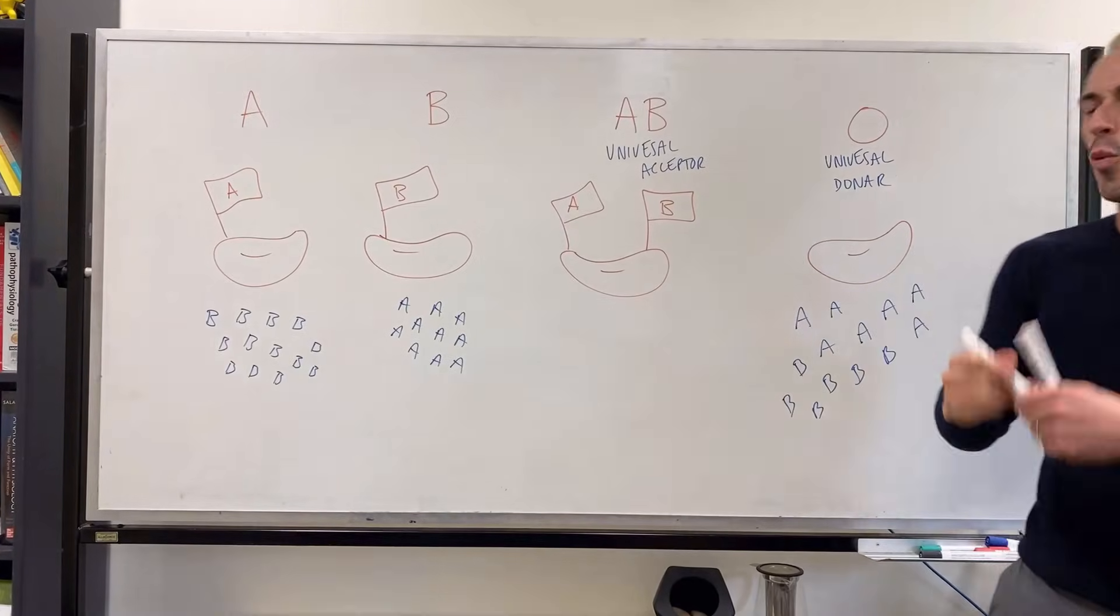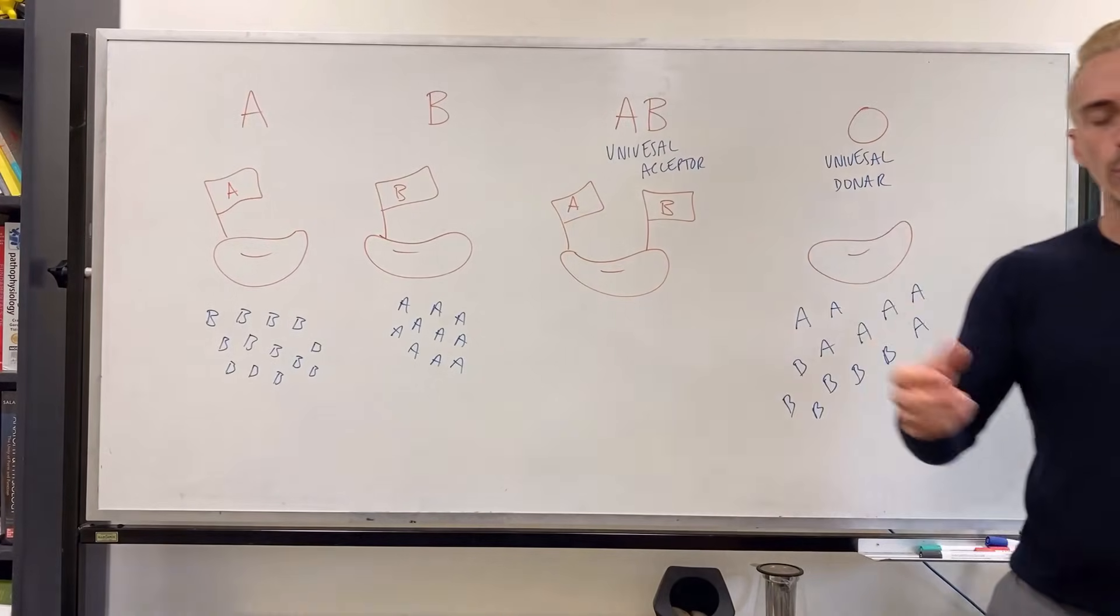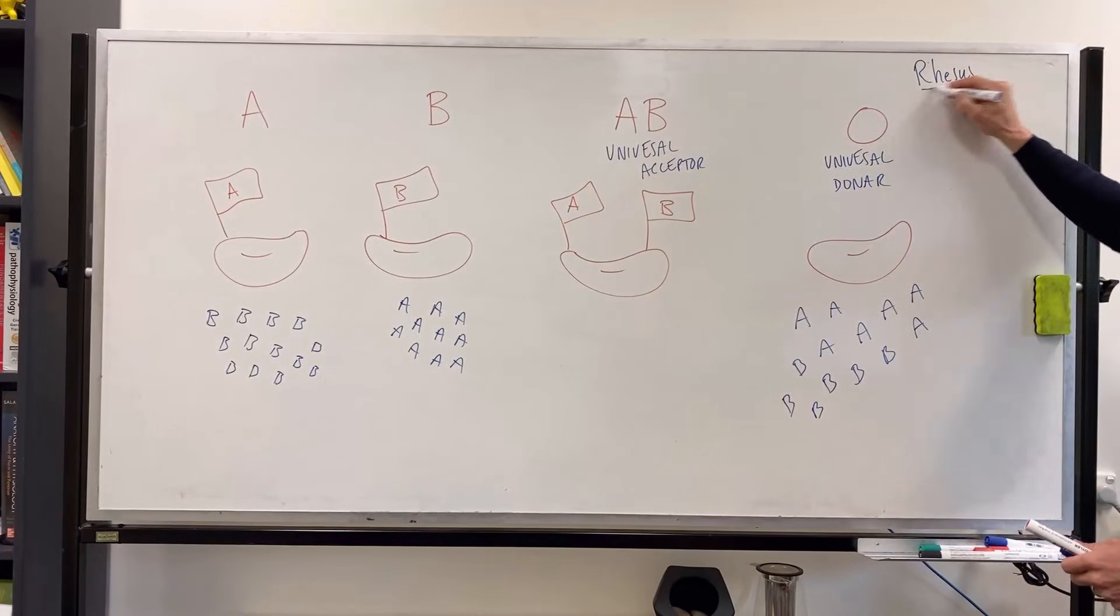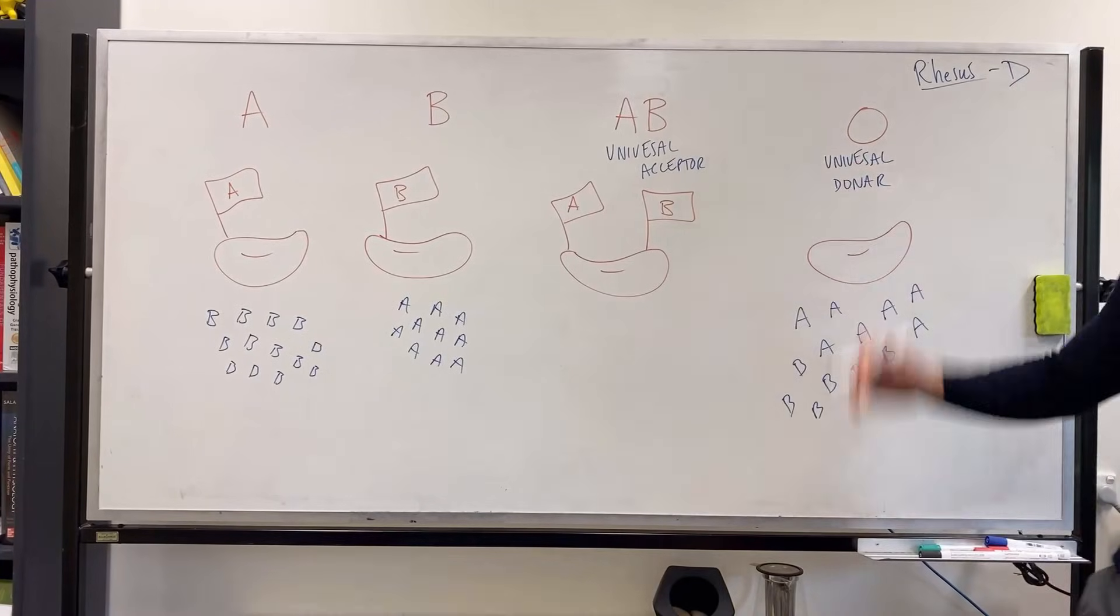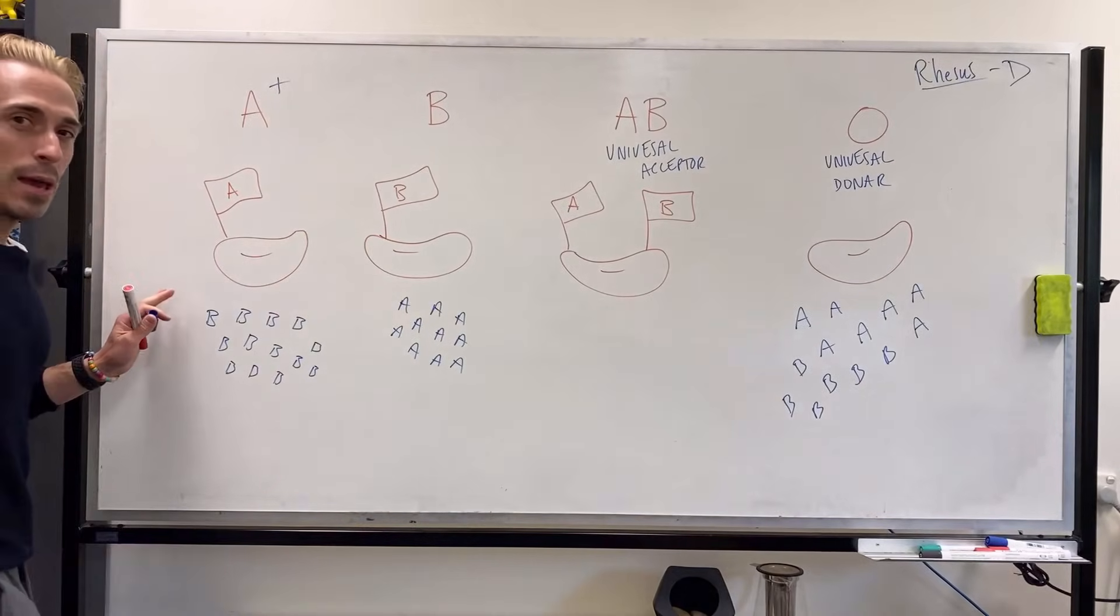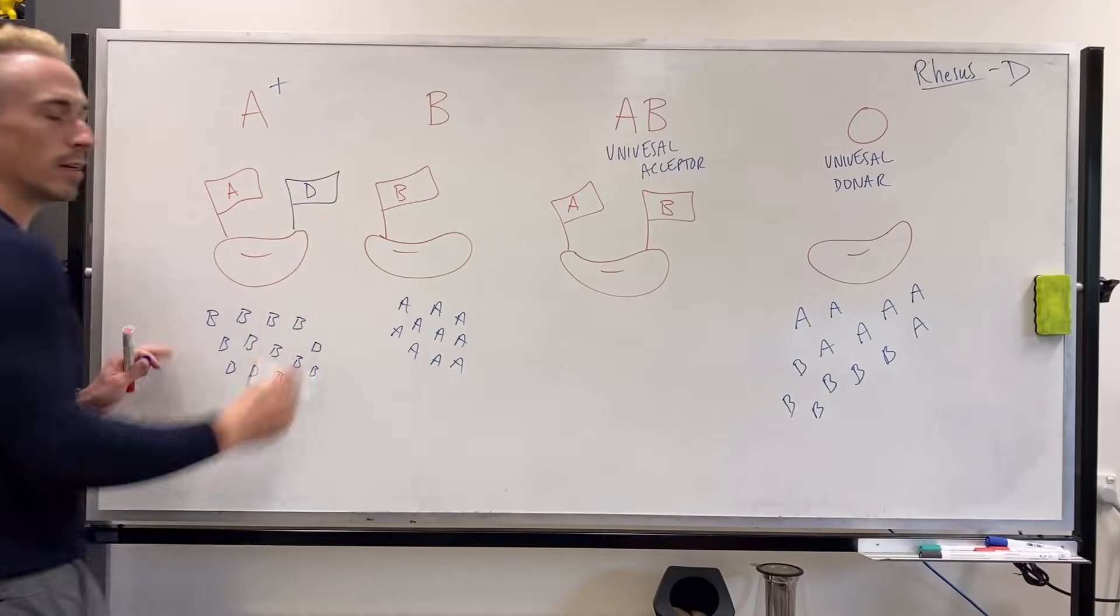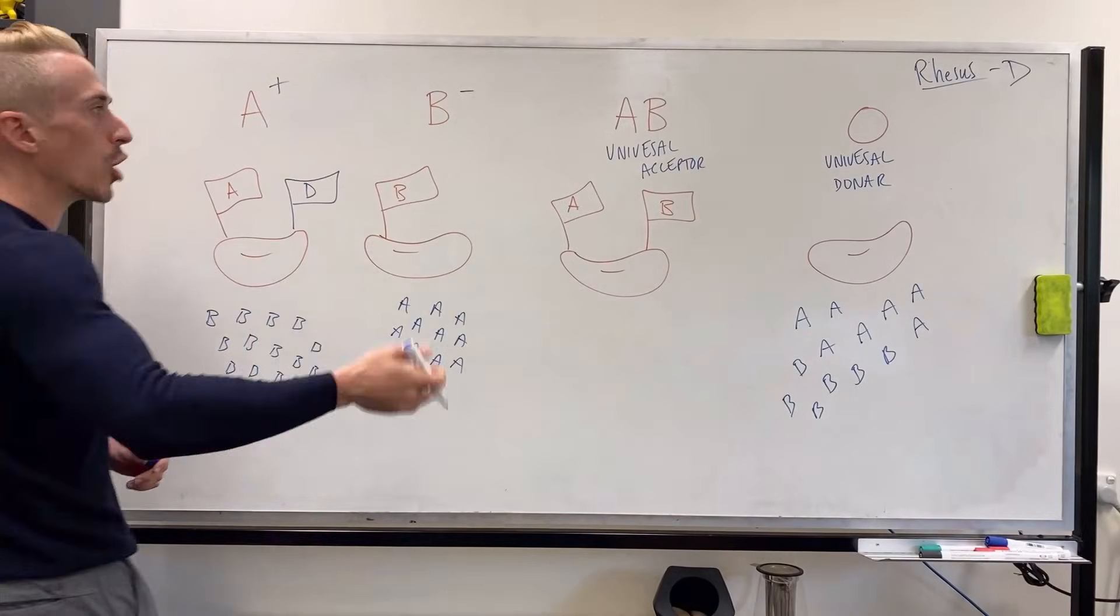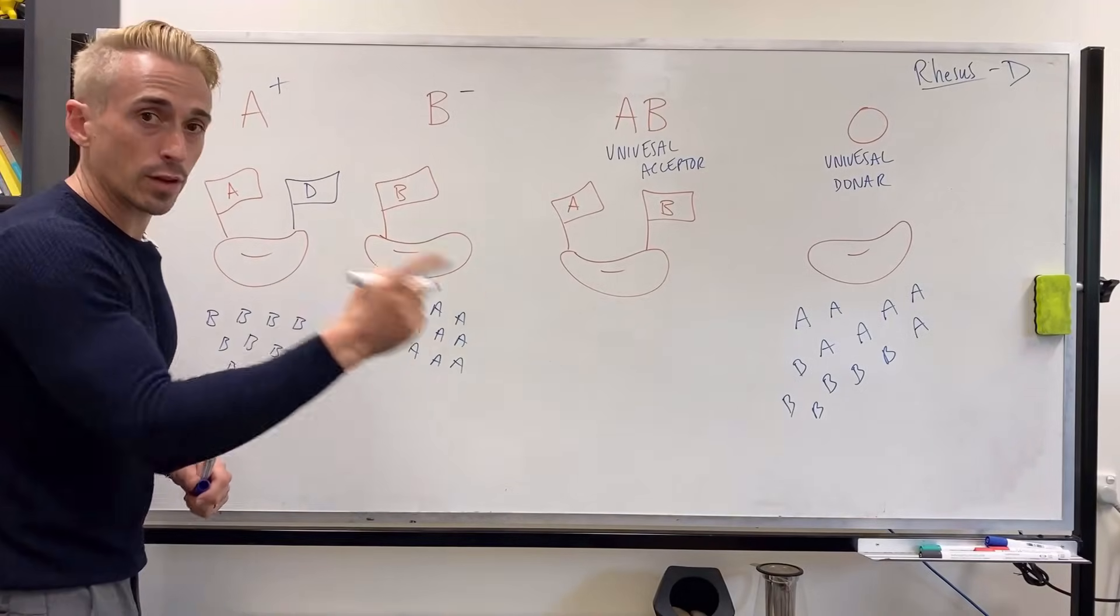Now you're probably sitting there going, what about the positive? I'm A positive or B positive or AB negative, for example. This is what we call rhesus factor. Now rhesus factor, named after rhesus monkey where it was first identified, is recognized as a D antigen or a D flag. So for example, if somebody is A positive, it means they don't just have the A flag, they've also got the D flag. If this person is B negative, it simply means they just don't have the D flag.